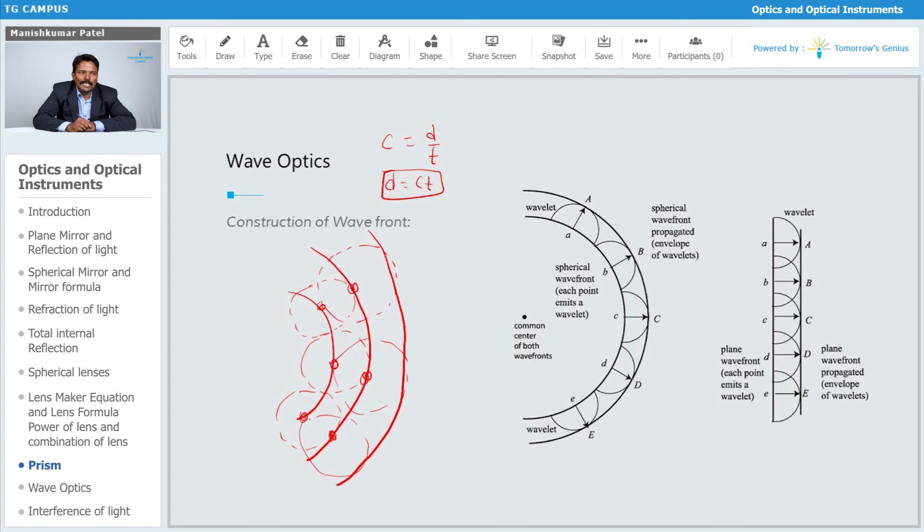When the wavefront is at a very far distance from that source, almost that wavefront will get converted into plane wavefront. When it travels a very large distance, it will get converted into plane wavefront. This is nothing but the plane wavefront which I had drawn over here.